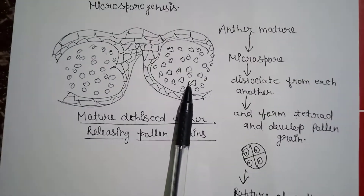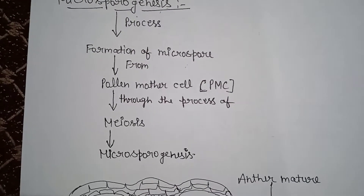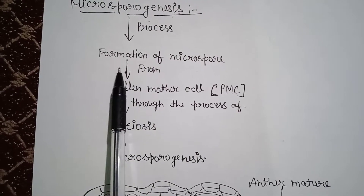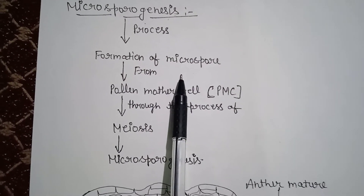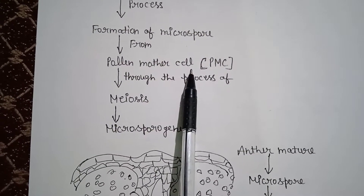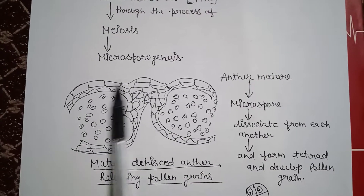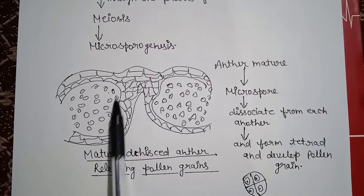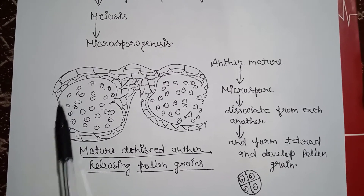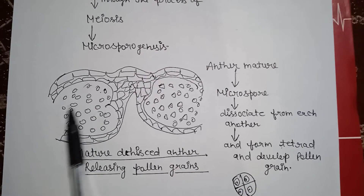I'm going to revise the topic again. Microsporogenesis is a process — it is the formation of microspore. Who makes microspore? The pollen mother cell. Which division? Meiosis. A tetrad is formed. I have shown you this structure — it is a mature anther. When it ruptures, the anther lobe is ruptured.